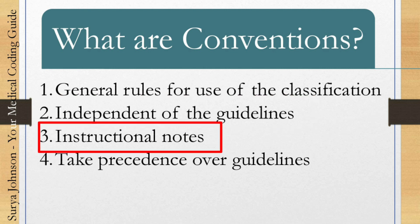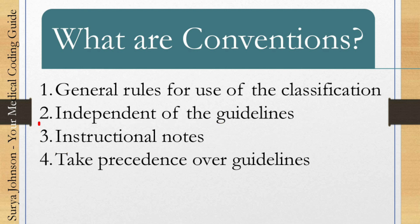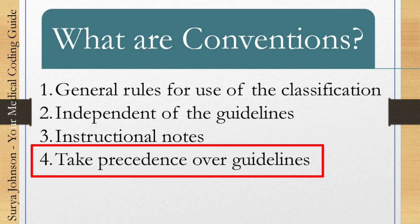Conventions are instruction rules. Whenever you see any conventions in the ICD-10 alphabetic or tabular list, you should focus on them because they give you some instruction — what you should look into and how you should understand that code. The fourth point: these take precedence over guidelines. They are above the guidelines but do not alter them, because they are independent of the guidelines.